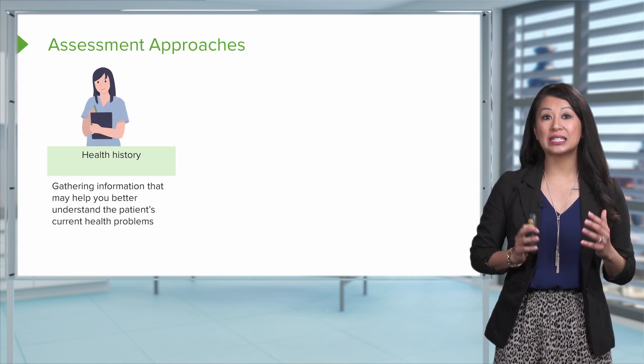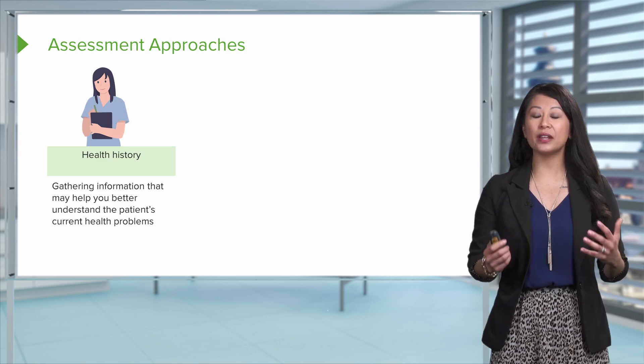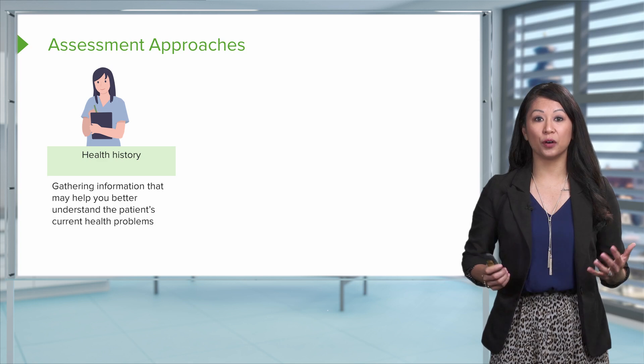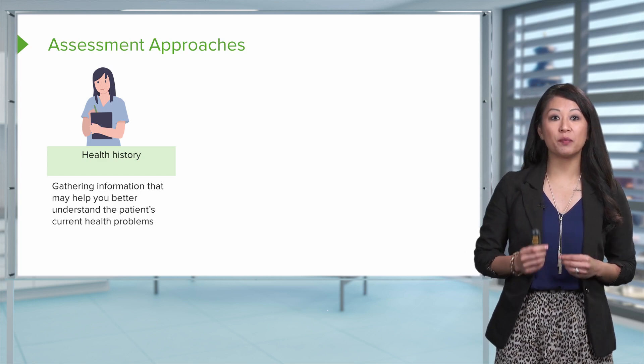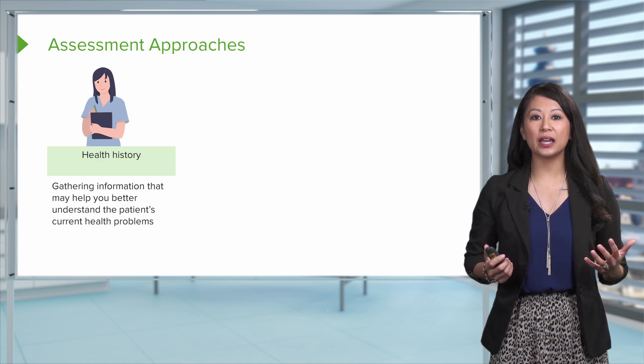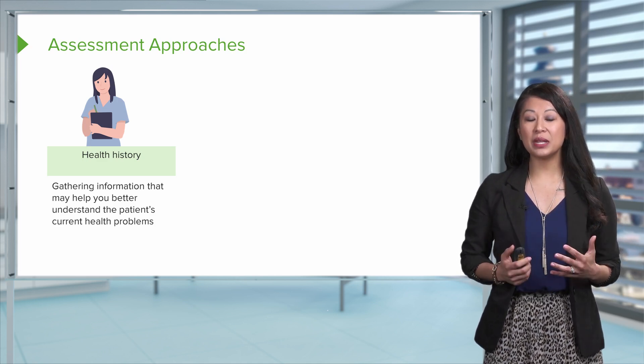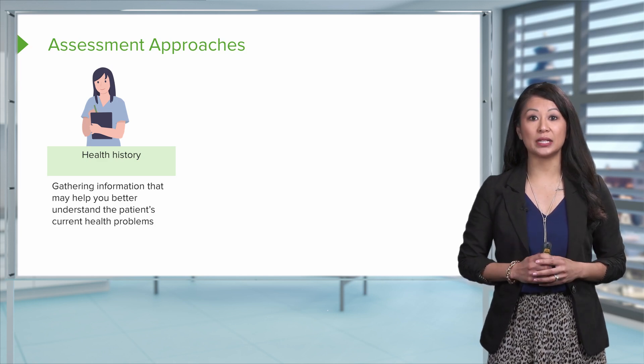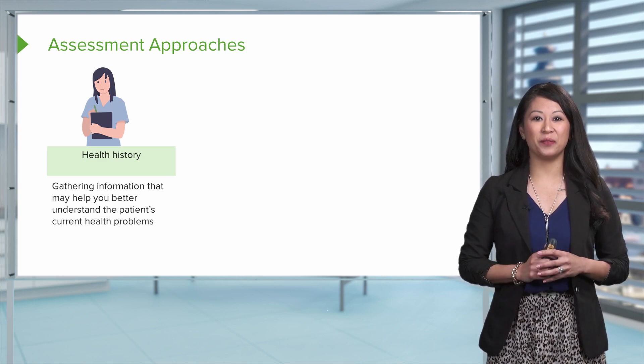Now let's talk about some assessment approaches on how we gather information. There's three very common types we'll talk through. So the first one is the health history. This is really important because this gathers information, and this lets us really understand the patient's current health problems, such as maybe they have a past medical history of diabetes, or they've had surgery recently. This is all important for us to know as a nurse when we're taking care of them.